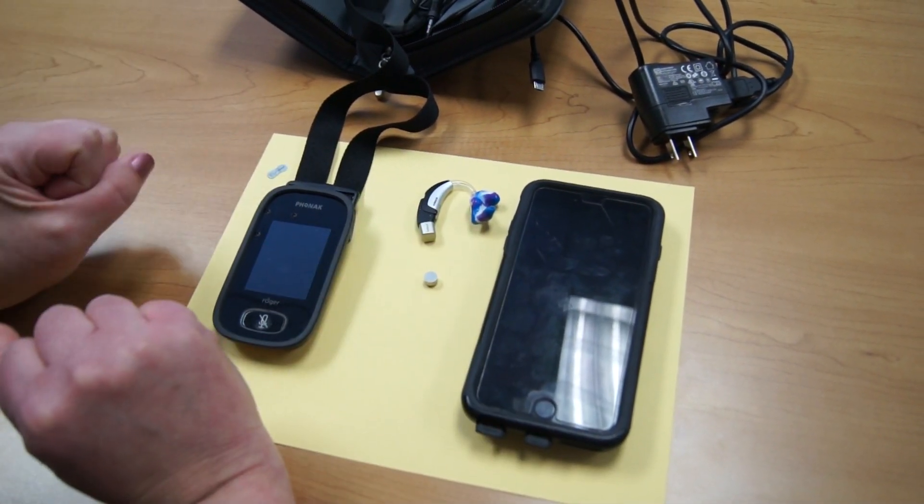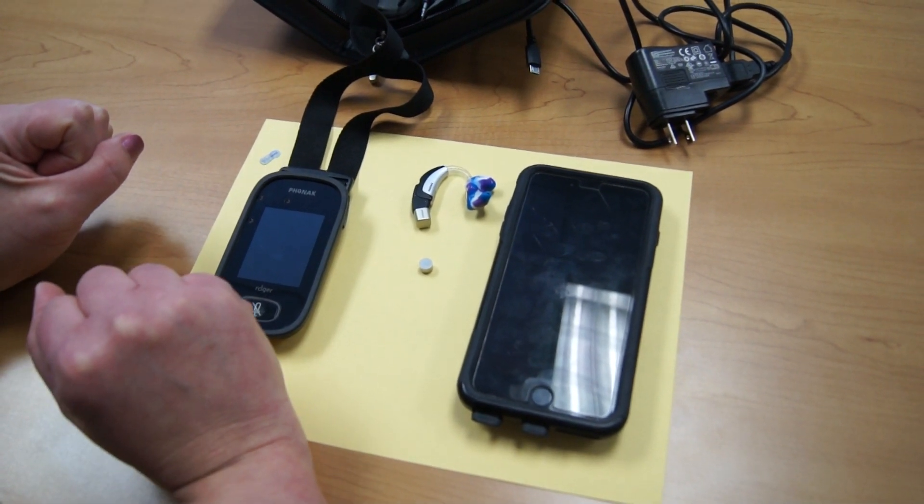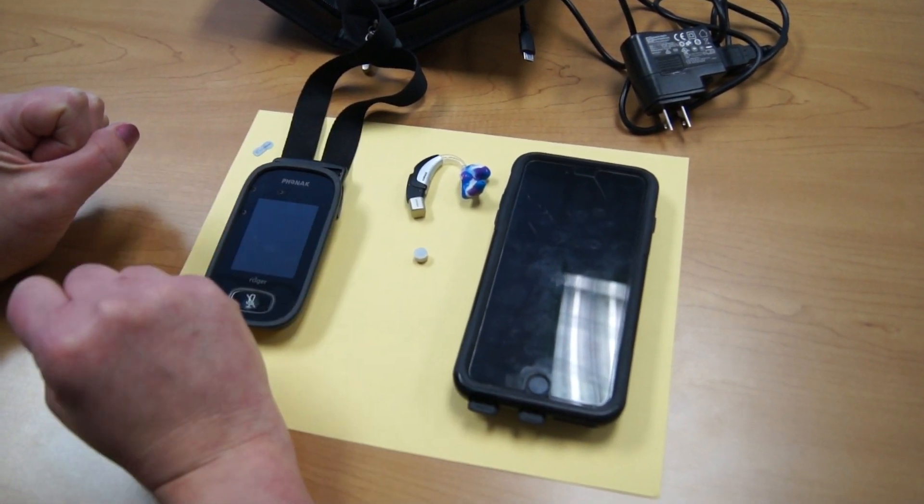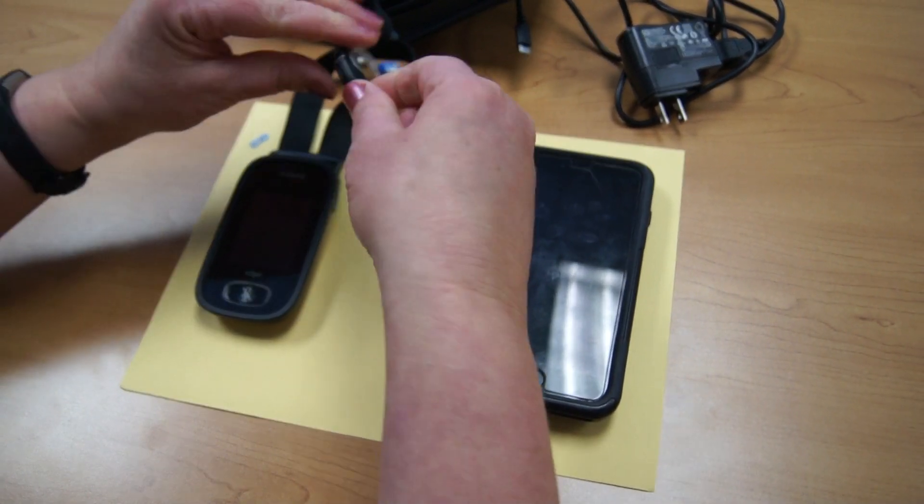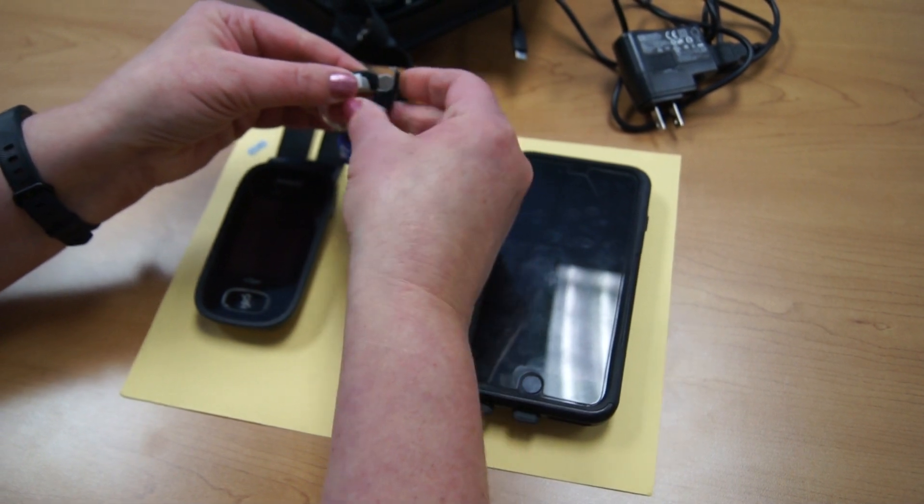Let the battery sit five minutes. The battery runs off of air and needs at least three to five minutes to soak up as much air to activate that battery. Once you've waited the five minutes, you'll open the battery door and place the battery.